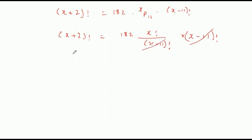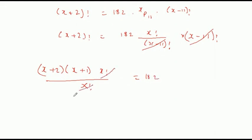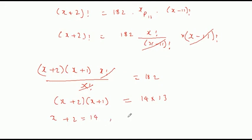इसको divide करते हैं। यहाँ देखें: X plus 2 into X plus 1 into X का factorial, X का factorial divide हो जाएगा — equal to 182। इससे X plus 2 into X plus 1 equal to 14 into 13। दो consecutive natural numbers का product equal है यहाँ दिखाया। तो X plus 2 equal हो जाएगा 14 के, यानी X का value 12 मिलेगा।